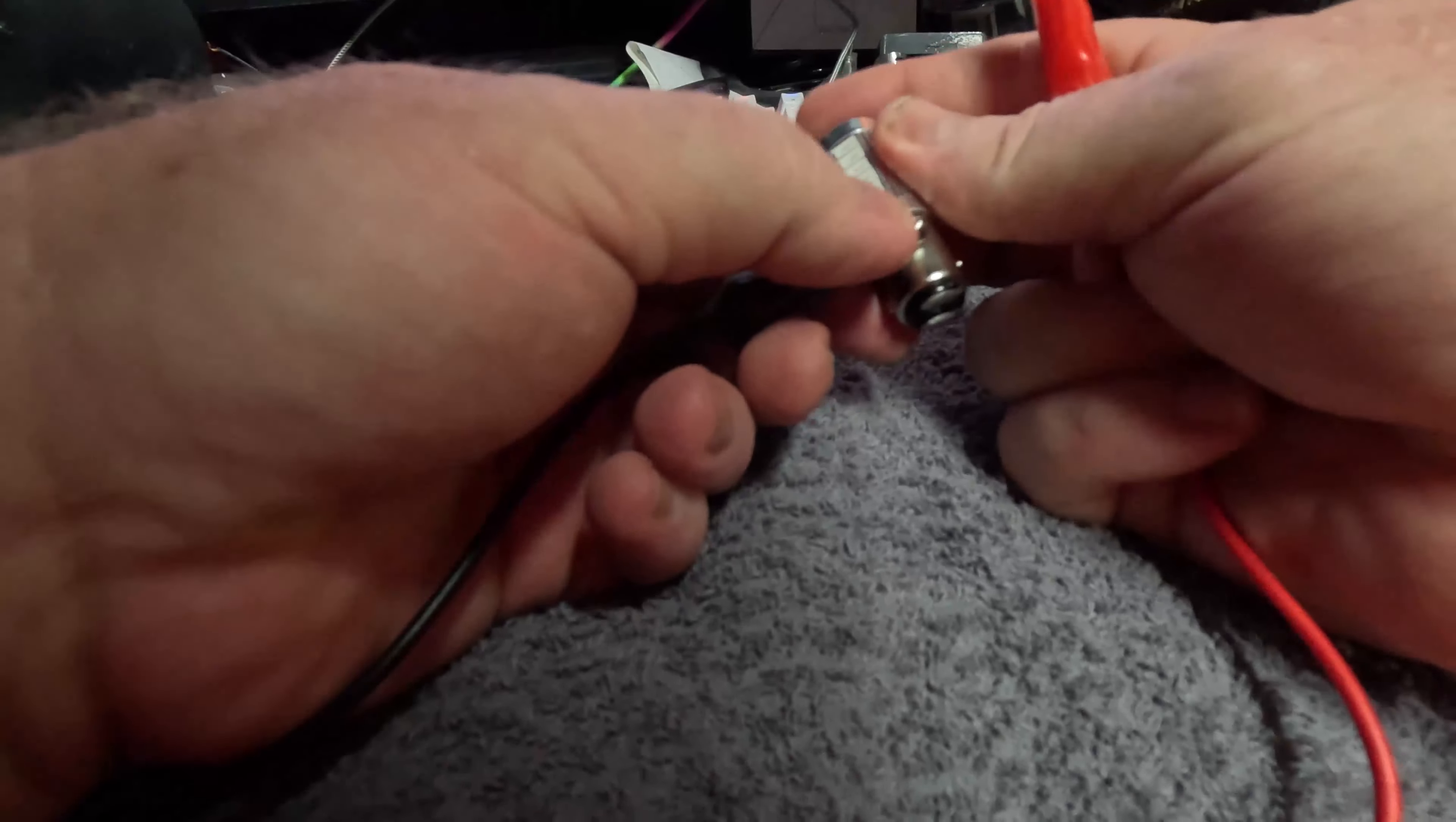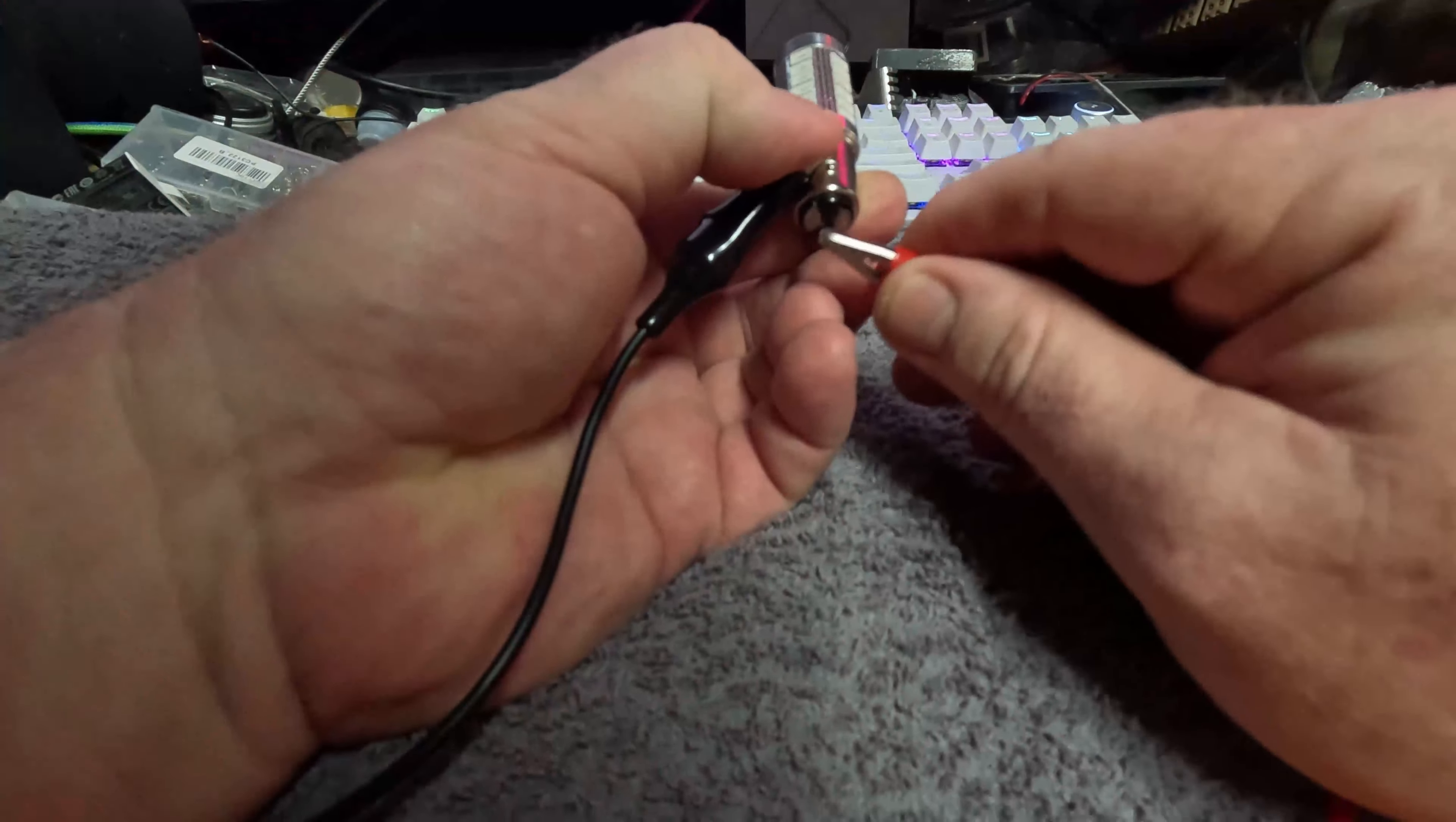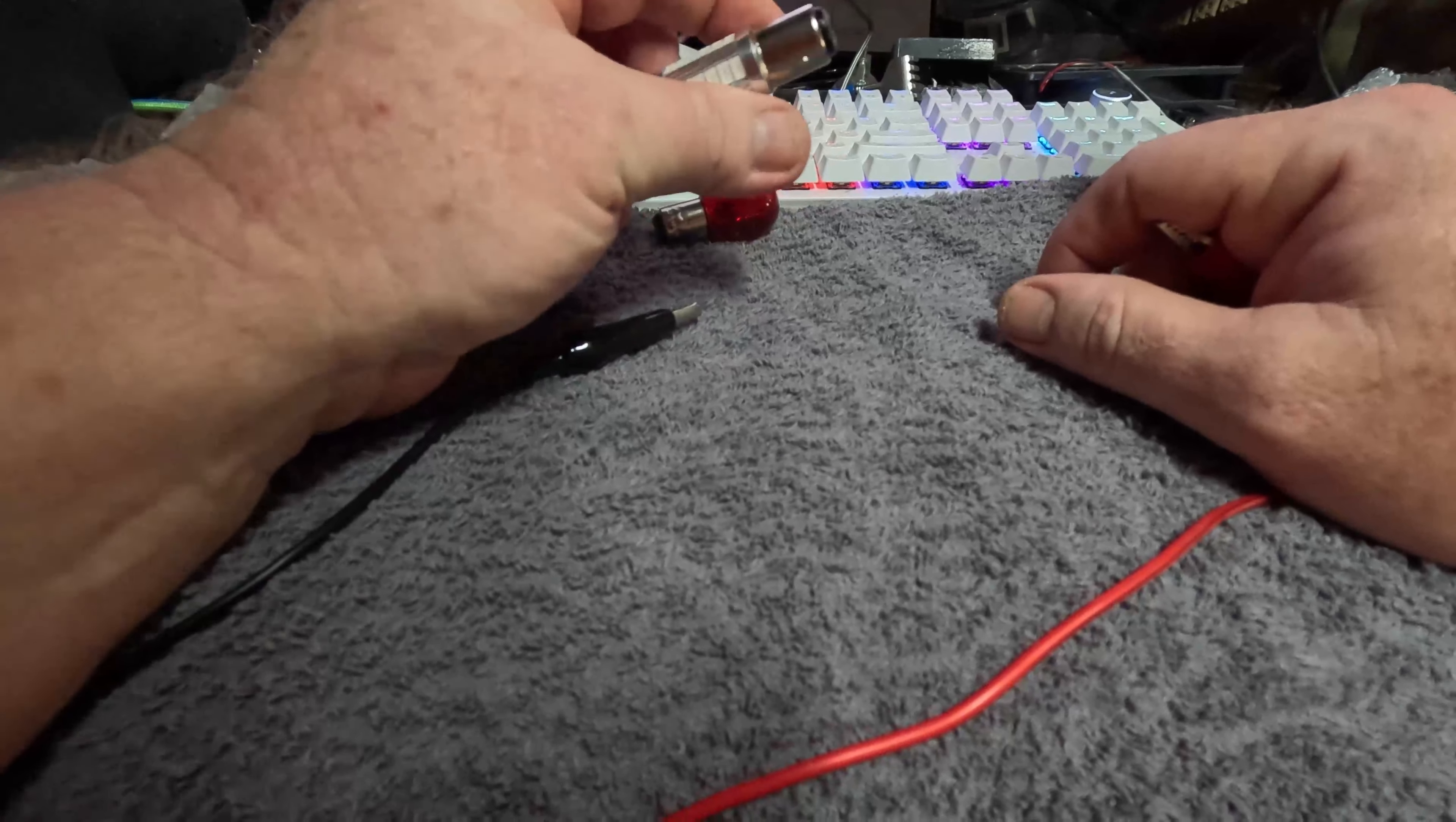Here is a normal incandescent bulb out of my car. It is a BAY15D and I do believe that stands for double, which is for the double filament that's inside. Let me see if I can get this so you can see everything. That's parking lights on one side, brake light on the other side. Two terminals, one is very much brighter than the other. Parking light, brake light.